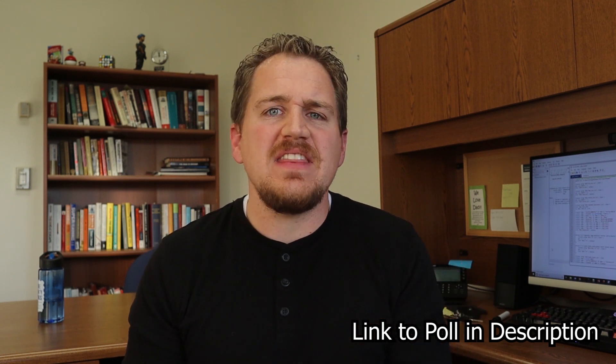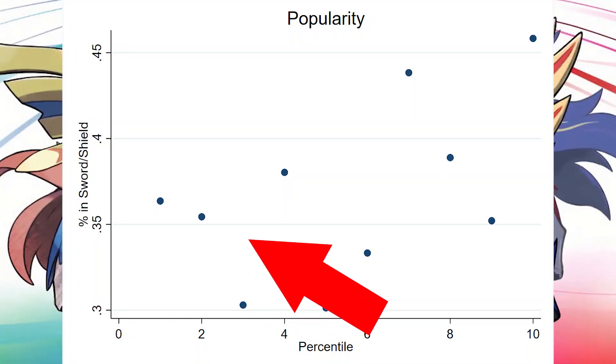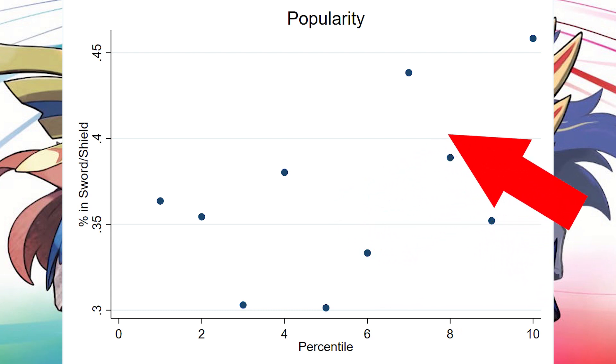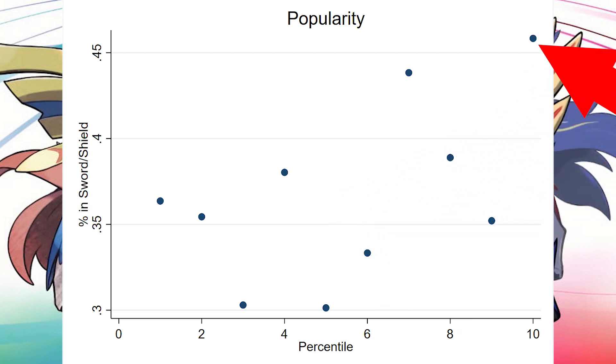What about popularity? They said there were going to be a lot of favorites. One way we can test this is by looking at a poll run on Reddit earlier this year — over 50,000 people responded and were able to rank the popularity of all pre-Sword and Shield Pokemon. Looking at decile popularity versus whether you're in the game, it does look like more popular Pokemon are being included, but it's not a perfectly clear relationship. We do see that the top decile — the most popular Pokemon — are making it into the game at the expense of some of the less popular ones. So popularity does appear to be a factor.